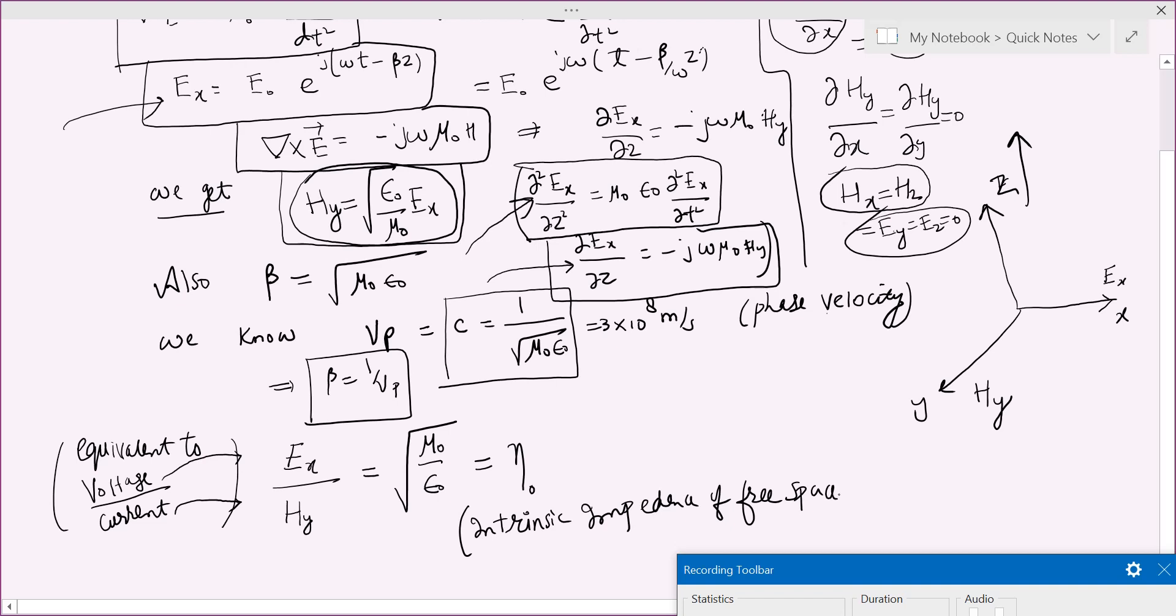In fact, for free space, you already know the epsilon naught and mu naught values. This almost comes out to be 377 ohms. Its unit is voltage per ampere, volts per ampere, ohm. That is also the reason we called it impedance.